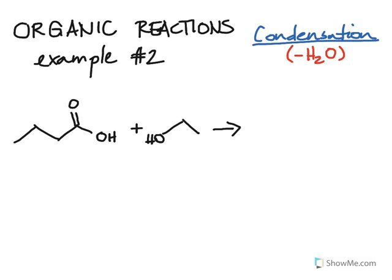Let's take a look at our ingredients first and then name them. Looking at the one on the left: since there are four carbons — 1, 2, 3, 4 — this will be a 'but-' prefix, and since it has a carboxylic acid group, this is butanoic acid.